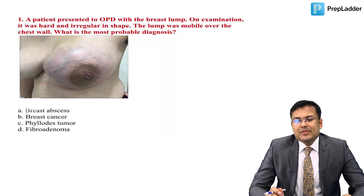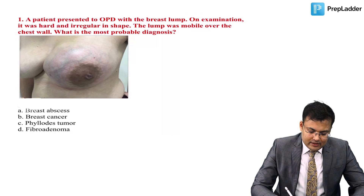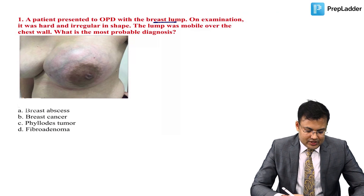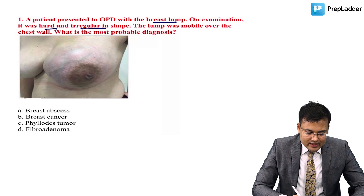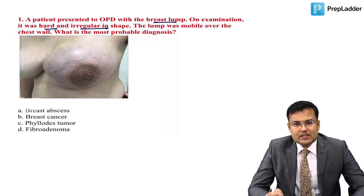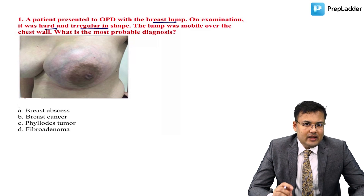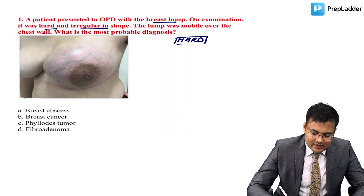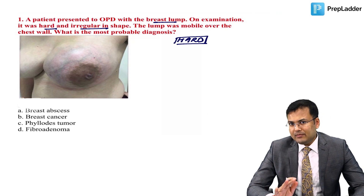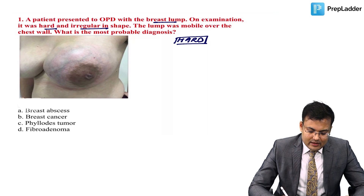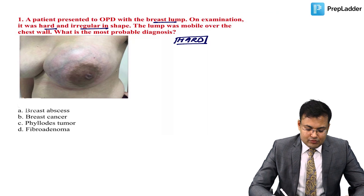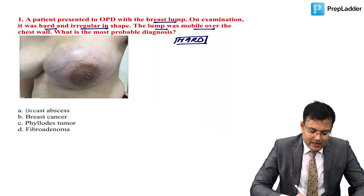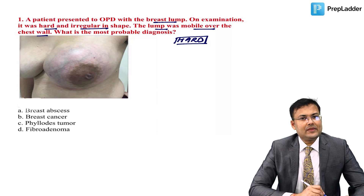The first question: a patient presented to OPD with a breast lump. On examination, it was hard and irregular in shape. A hard lump generally means it is most probably malignant, not benign. The lump was mobile over the chest wall.